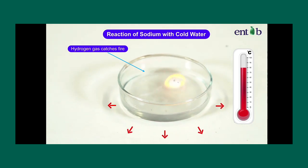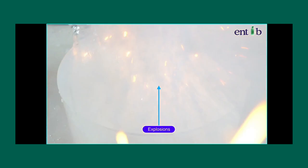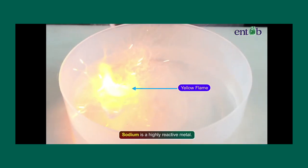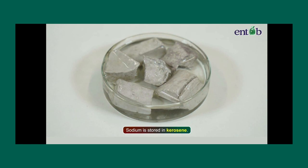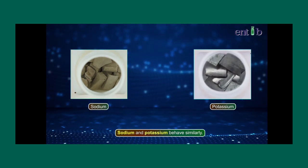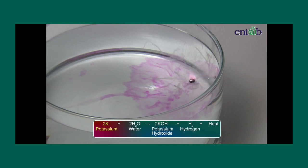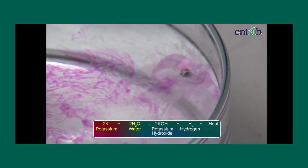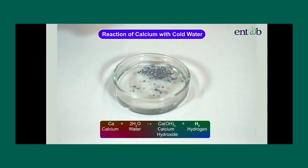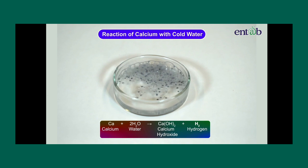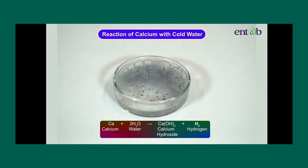The hydrogen burns with a yellow flame, causing small explosions. We can conclude that sodium is a highly reactive metal — it is stored under kerosene. Potassium also reacts vigorously with cold water, just like sodium, to form potassium hydroxide and hydrogen gas. Calcium metal also reacts vigorously with cold water to produce calcium hydroxide and hydrogen gas.